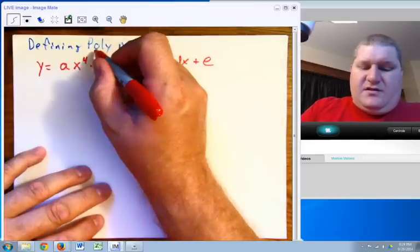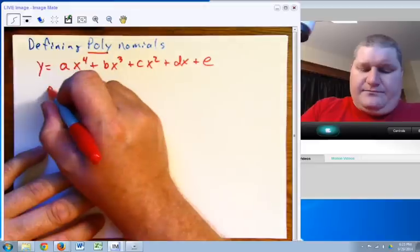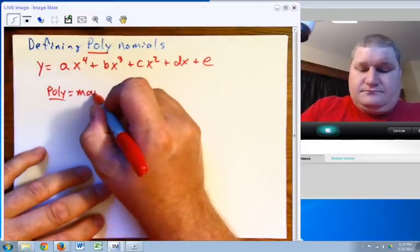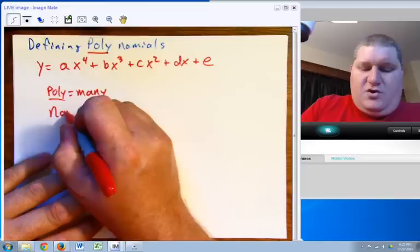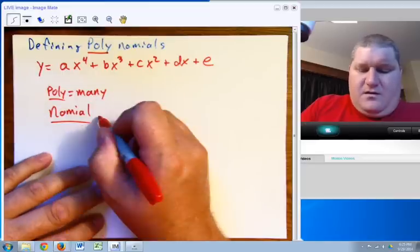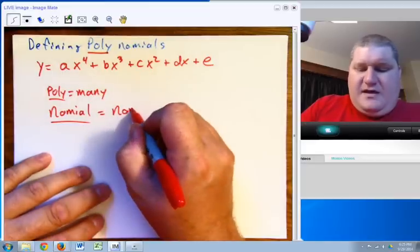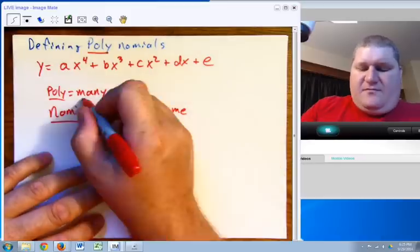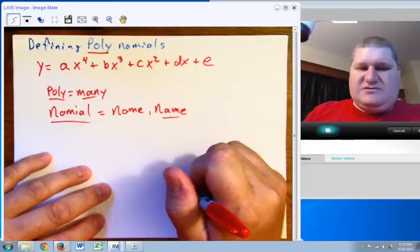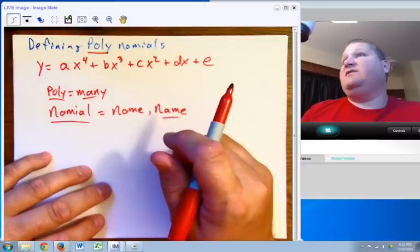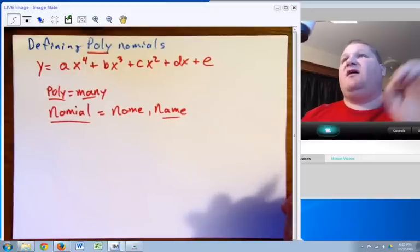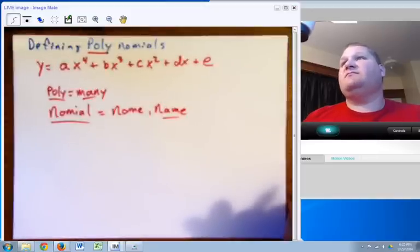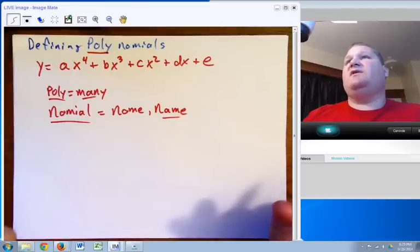Now, these are called polynomials. Poly, meaning many. Nomial, nome, or name. So many names. So in this case, we have something with many names. Really, in reality, what we have is many terms.